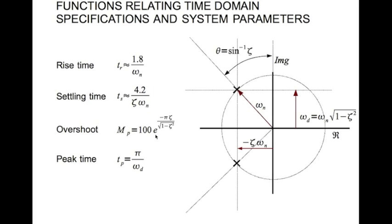For percentage overshoot, if zeta is constant, then percentage overshoot is constant. So any system that has its roots on this radial line has the same overshoot. And similarly, when omega d is constant, peak time is constant — meaning any system that has its roots on this horizontal line has the same peak time. You could draw several horizontal lines, and all systems on a given line will have the same peak time.